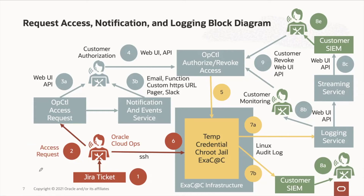Access request processing with operator access control is an eight-step process whereby Oracle initiates a process with a ticket of some sorts and you as the customer respond. In this diagram, we'll show the Oracle operator steps in red, the customer notification and authorization of the access shown in blue, the work in the Linux chroot jail shown in yellow, and then finally the customer security staff monitoring in green.